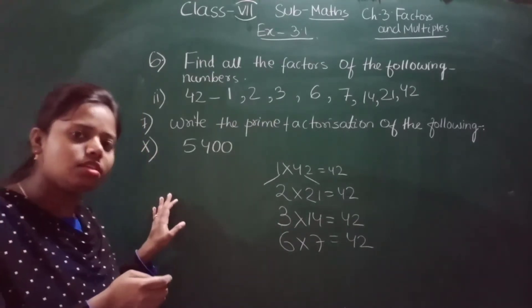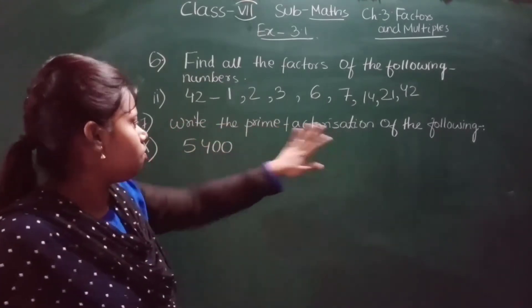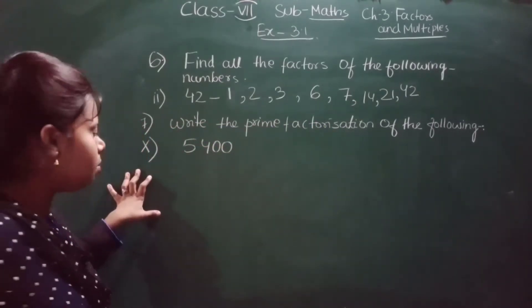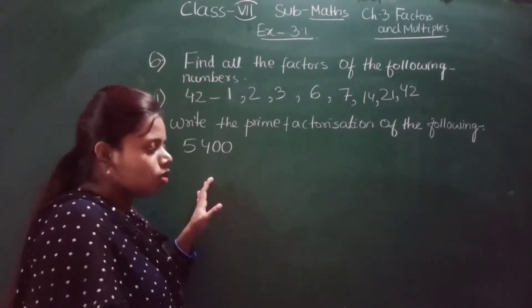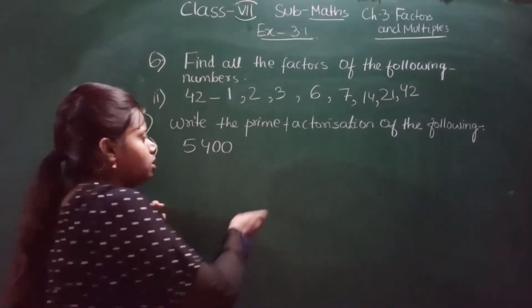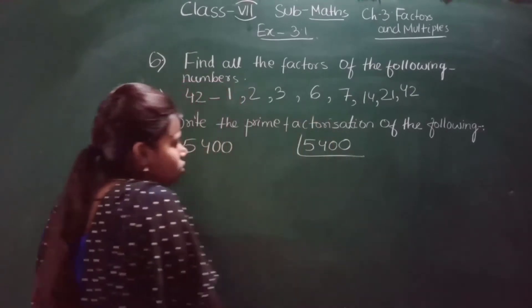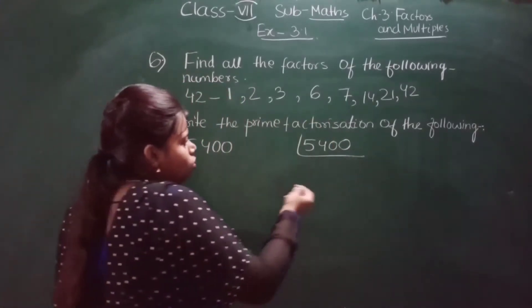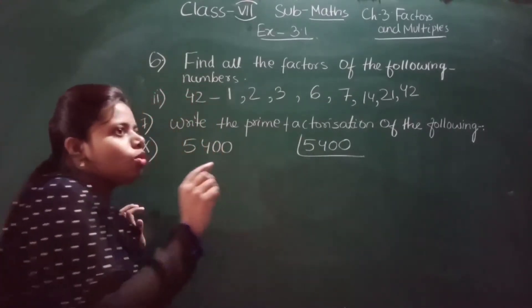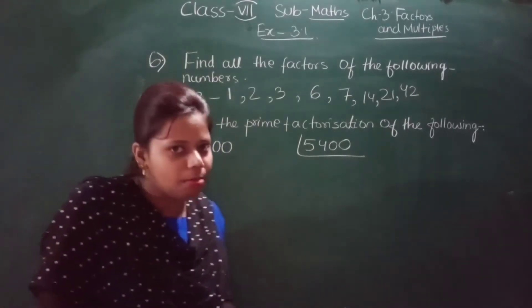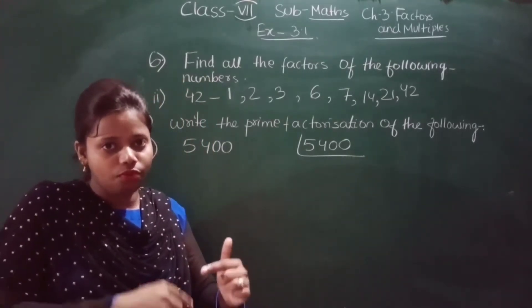Now let's see question number 7: write the prime factorization of the following. I have chosen one number — question 10, which is 5400. We are going to do the prime factorization of 5400. I have already taught you this, but let us do it once more for good practice. Prime factorization must be done using only prime numbers, starting from 2.